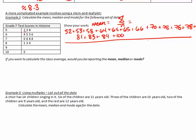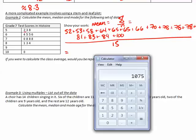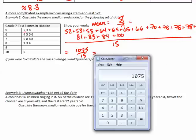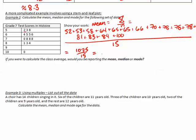I have all my numbers here. I added up all the numbers, and this is all divided by the total number of numbers. If I count them up, there are 15 numbers. The numerator is 1075 divided by 15, and my answer is 71.6 repeating, so approximately 71.7. This is the mean mark.